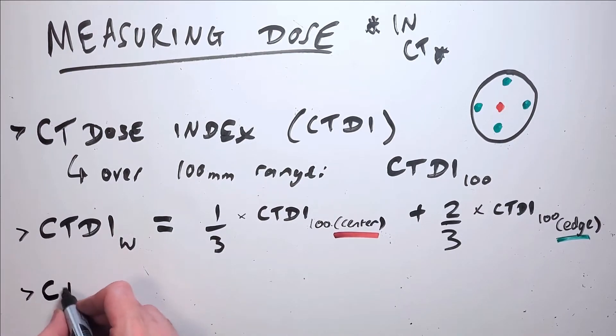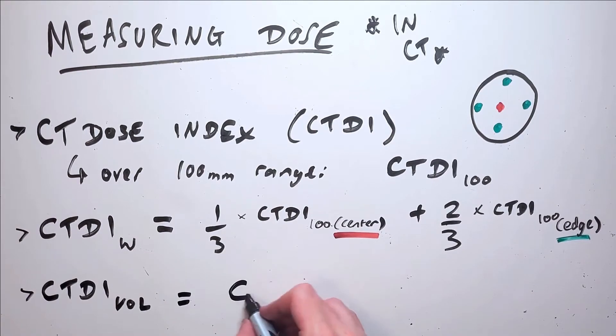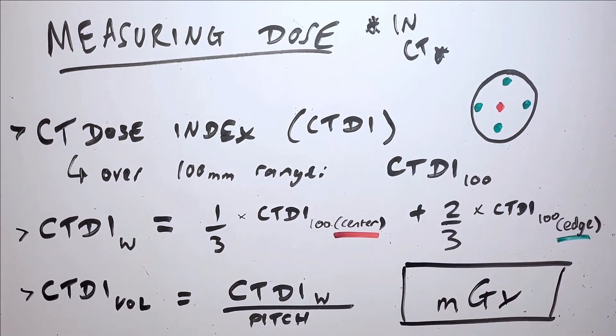The CTDI volume is a measurement that takes the helical pitch into consideration. Higher pitch means lower dose due to undersampling, and conversely lower pitch means higher dose due to oversampling. The CTDI volume is calculated by dividing the weighted CTDI by the pitch factor. These are all measured in milligrays.